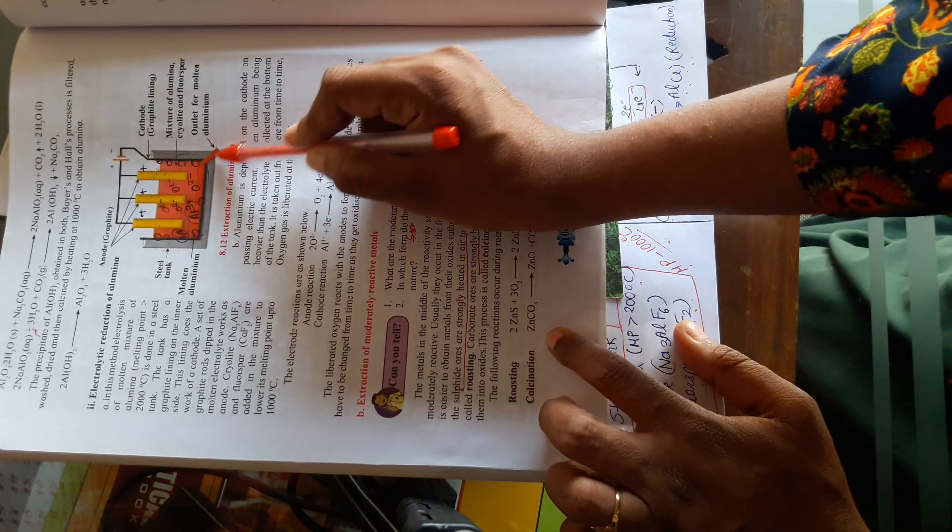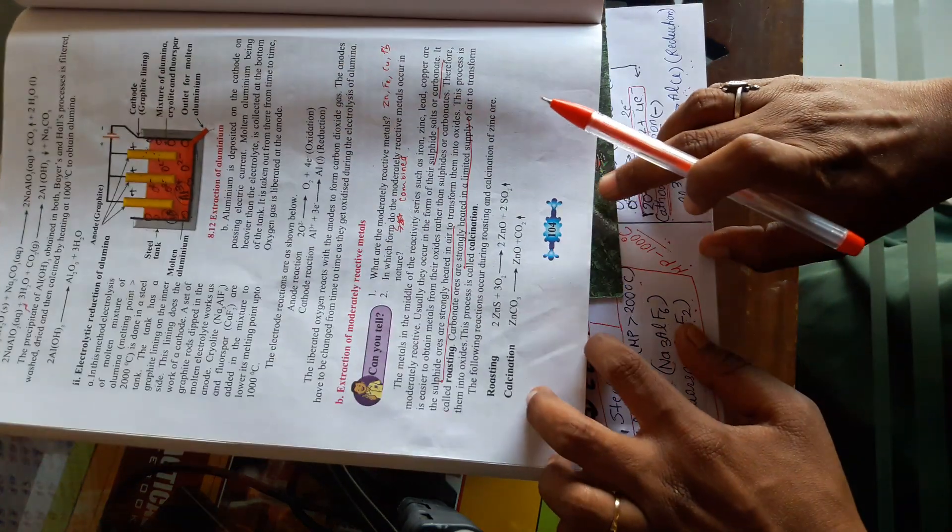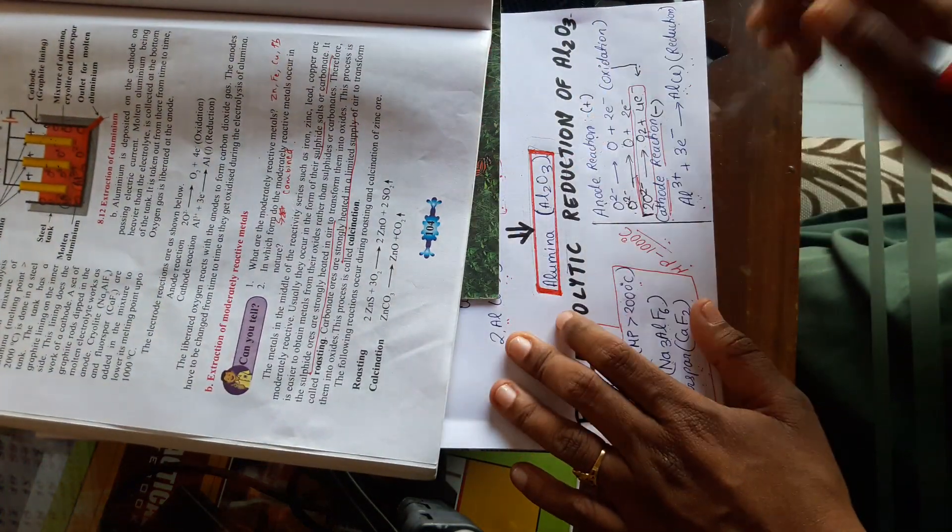The metal is in liquid state with high density, so it will fall down and settle at the bottom, from where there is an opening to remove the molten aluminium.